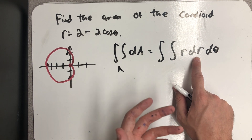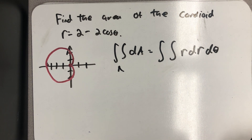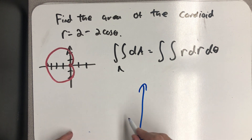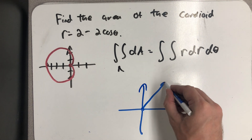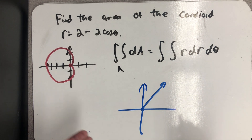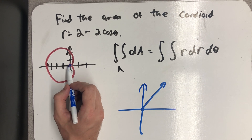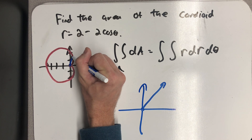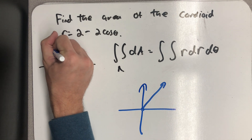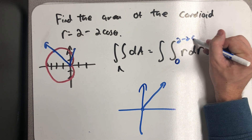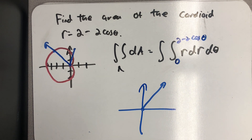R is our first variable of integration and theta is the second. We can follow our procedure: R is the first variable, and I need to send a ray through the region in increasing order of R. In polar coordinates, R equals 0 puts you at the pole, and any line segment drawn away from the pole is in increasing order of R. Starting at R equals 0, I'm in the region, and as R increases I go through the region and hit the cardioid. So the bounds for R are from 0 to 2 minus 2 cosine theta, because I start at 0 and hit the graph of the cardioid.